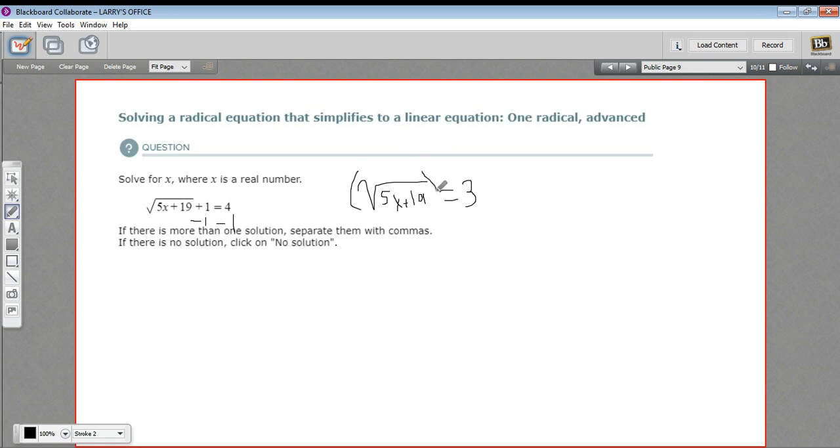Now I've got that square root alone, I can just square both sides of the equation. So over here, this squaring undoes the square root, so I'll get 5x plus 19. And over here, 3 squared is 9.